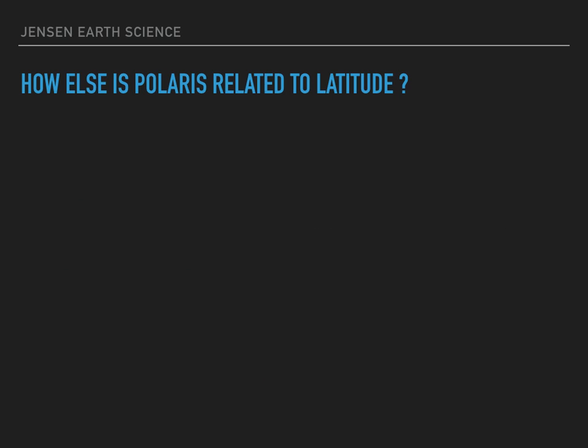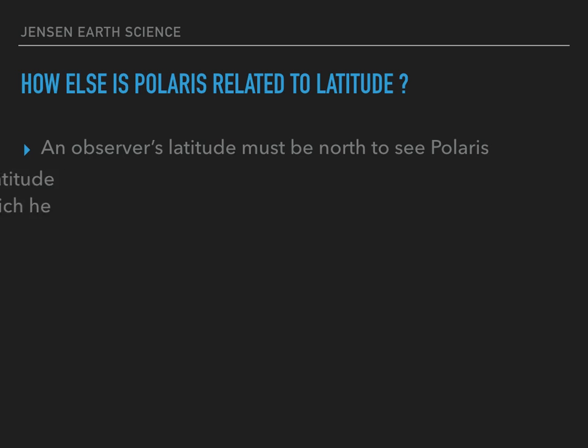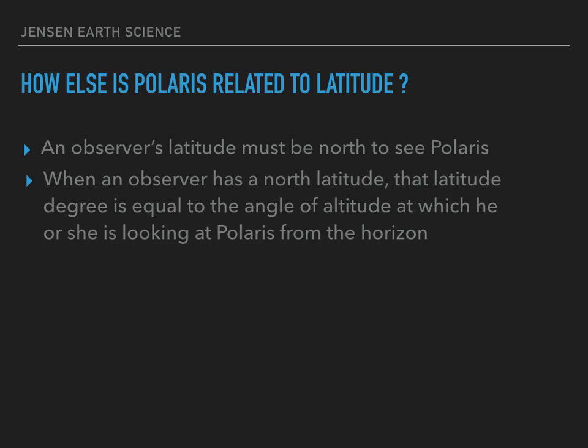So how else is Polaris related to latitude? Like we said before, an observer's latitude has to be North to see Polaris. There's also a second way that Polaris is related to latitude. When an observer has a North latitude, that latitude degree is equal to the angle of altitude at which he or she is looking at Polaris from the horizon. This means if we have the horizon and Polaris with a 15-degree space in between them, the person standing there must have a latitude of 15 degrees North.